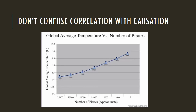The third major pitfall is confusing correlation with causation. This graph is used by the Pastafarians — the religion of the Flying Spaghetti Monster — to explain global warming through the shrinking pirate population. As the graph shows, the number of pirates since the 1800s has significantly decreased while global temperatures have increased. Does that really mean temperatures are getting warmer because there are fewer pirates? No, that is just silly. Don't confuse correlation with causation.